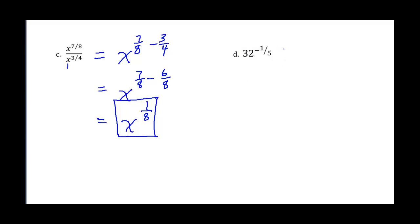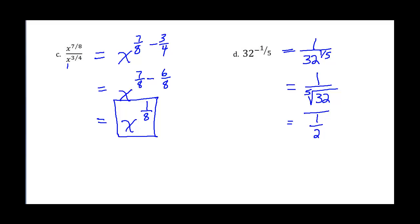Last example in this section: 32 to the negative 1 fifth. Since I have a negative exponent, I use the reciprocal rule and put it in the denominator: 1 over 32 to the 1 fifth. Since 1 fifth means the fifth root, this becomes 1 over the fifth root of 32. What number multiplied by itself 5 times gives 32? That's 2. So my final answer is 1 half.